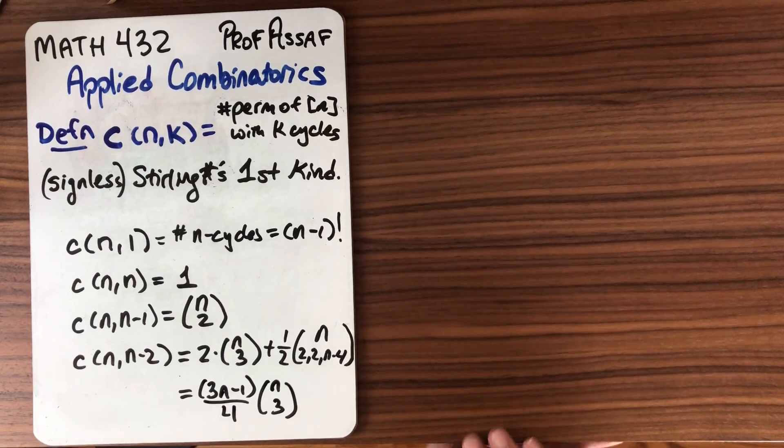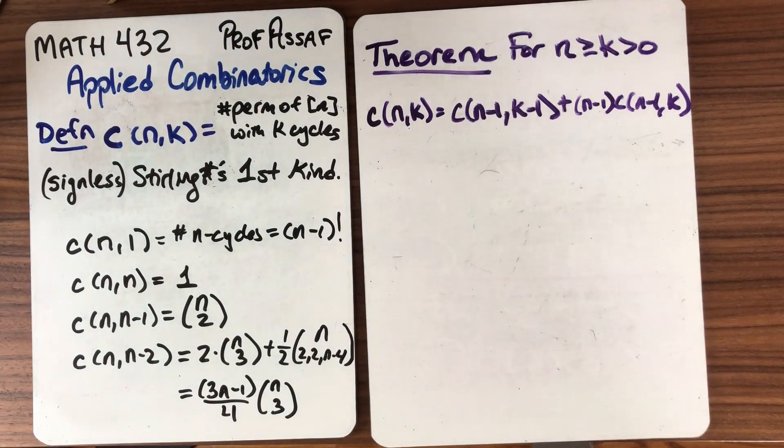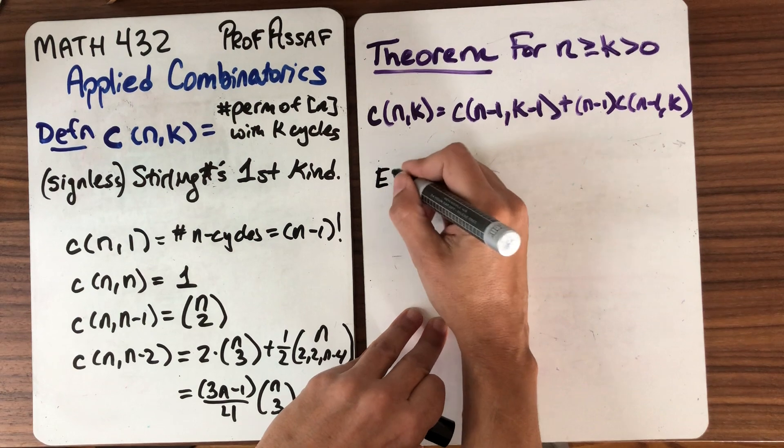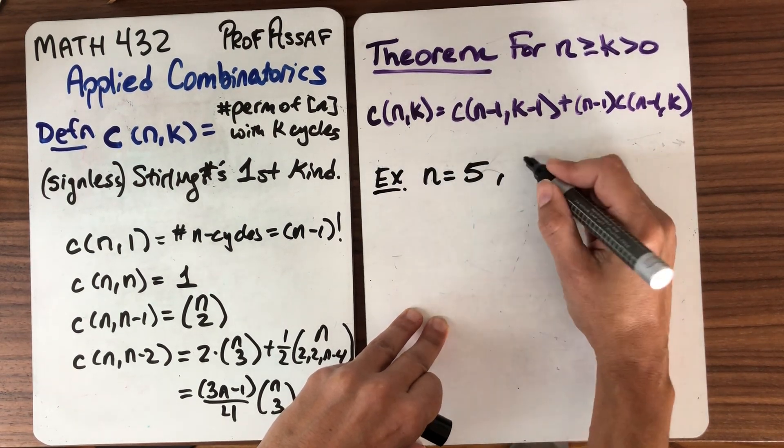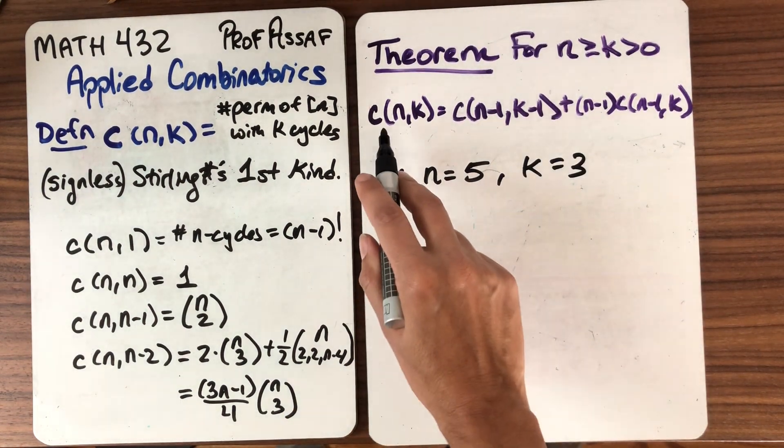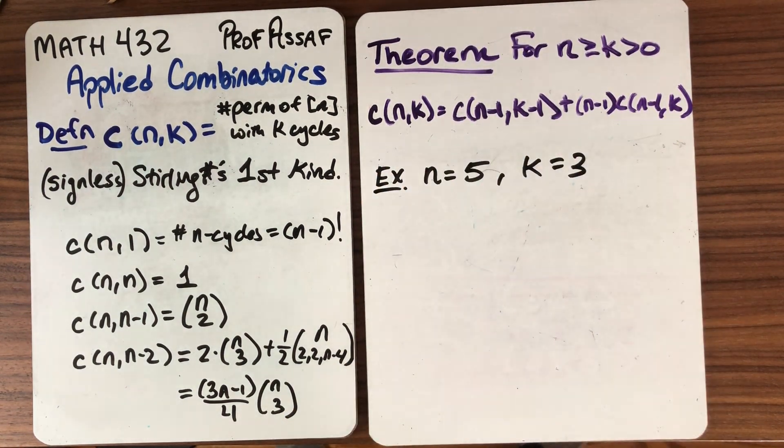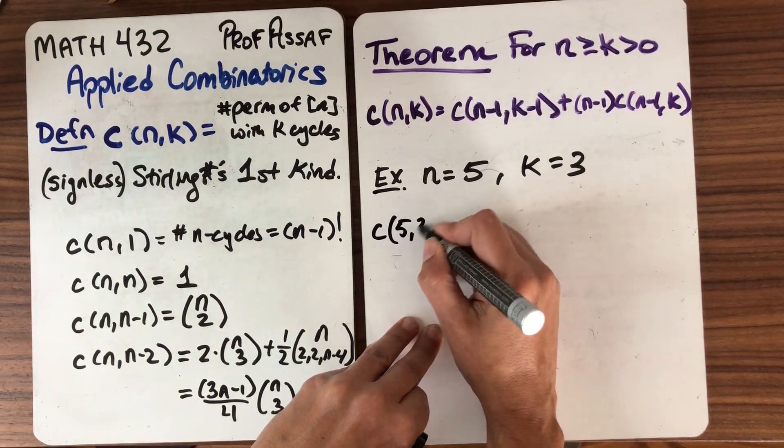But let's get a way to compute these guys. Here's the theorem we're after. So similar to before we can do an example to kind of see that this theorem is true. Here's an example. Let's take the same example that we did last time n equals 5 and k equals 3. We want to compute c(n,k) and then compute this side.